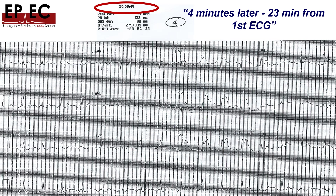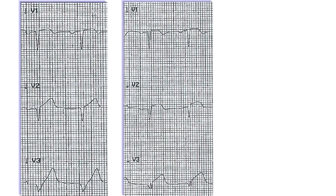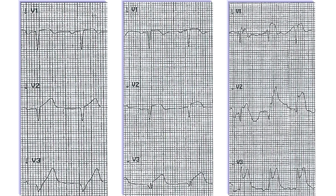To summarize the Poole timeline: the first ECG with the De Winter sign, then nine minutes later the second ECG showing STEMI, then 23 minutes from the first ECG the third ECG — and in between the second and third ECGs, the VF cardiac arrest.